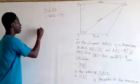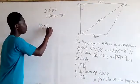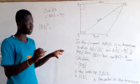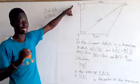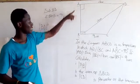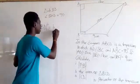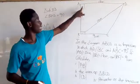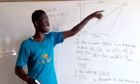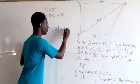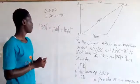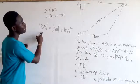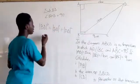The hypotenuse is BD. BD squared is equal to the sum of the squares of the opposite and the adjacent sides. BD is 17cm.